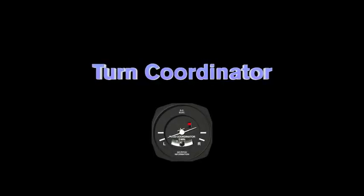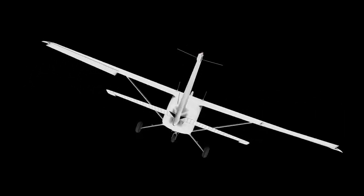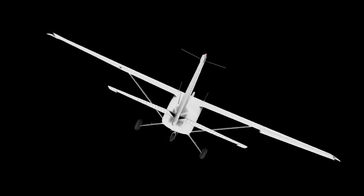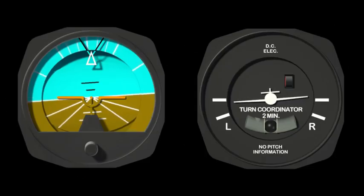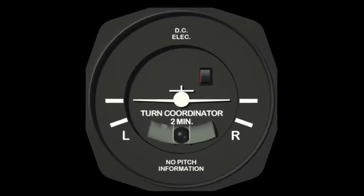The turn coordinator is a supporting instrument used while banking. It is used both to indicate the rate and quality of the turn. It can also be used as a backup source of bank information in the event the attitude indicator fails. In the center of the face of the instrument lies a miniature airplane that indicates the rate of turn the aircraft is currently in. Two tick marks indicate level. The other two tick marks indicate what is called a standard rate turn. A standard rate turn is one that takes two minutes to complete a 360-degree full circle. This is the rate that all pilots fly when in instrument meteorological conditions, meaning they have no outside references to follow.